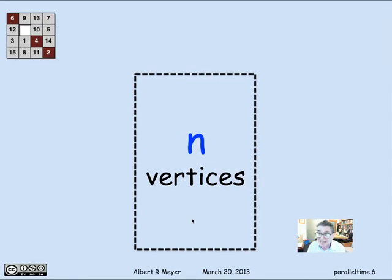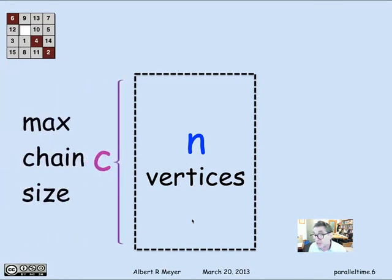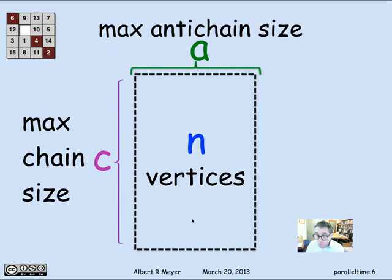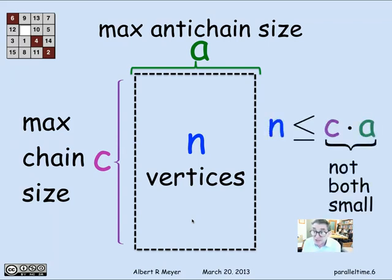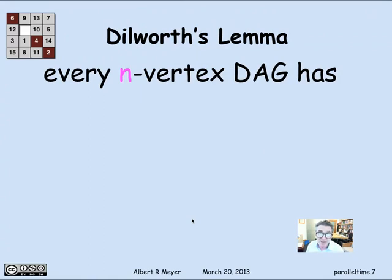This is a general phenomenon. If you have a DAG with n vertices where the maximum chain size is C and the maximum anti-chain size is A, then the total number of vertices is at most C times A. So the total number of tasks you can do, finishing in C steps using at most A processors, is bounded by C times A. This means you can't have both the chain size and anti-chain size be too small, since their product must be at least n. This can be rephrased as a lemma credited to Dilworth — a special case of Dilworth's theorem, though we don't need the general theorem.